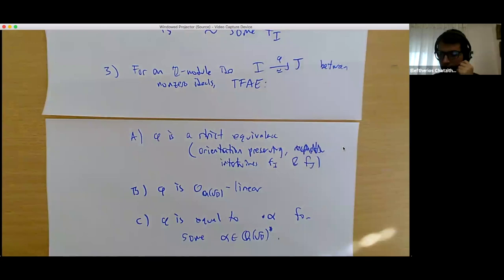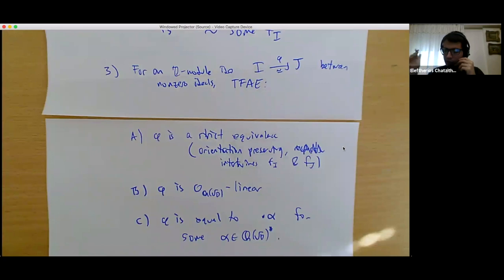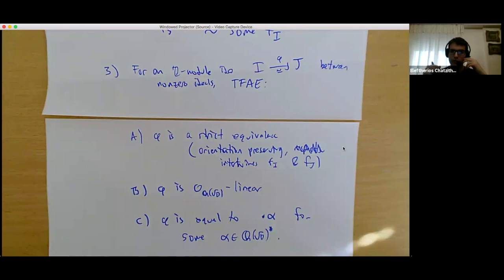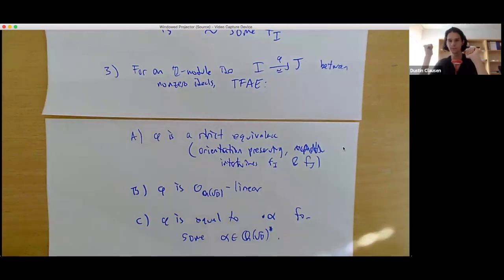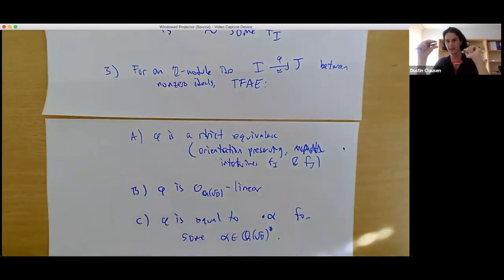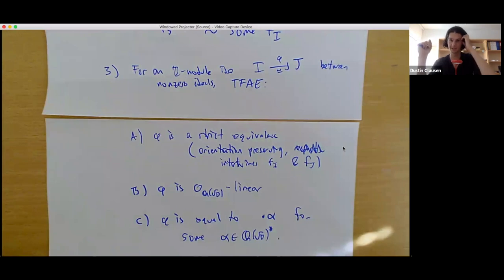A quick question: when we say f sub I is a positive definite binary quadratic form with discriminant D, does this mean that the non-zero ideal I is isomorphic as a Z-module to Z squared? Indeed, that is true. This follows on abstract grounds: if you have any finite free Z-module of rank n, in this case n equals 2, and any finite index subgroup, then that subgroup is also free abelian of the same rank.